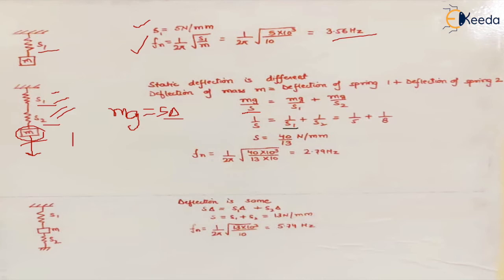Knowing S1 and S2, we can find the equivalent spring stiffness. The formula for natural frequency is again 1 upon 2π under root S upon M. In this case, the equivalent S is 40 upon 13. We place the value and get the answer.